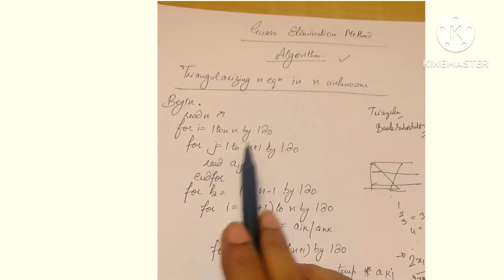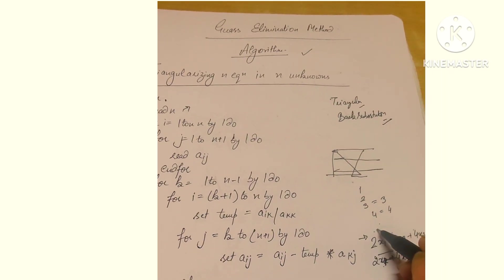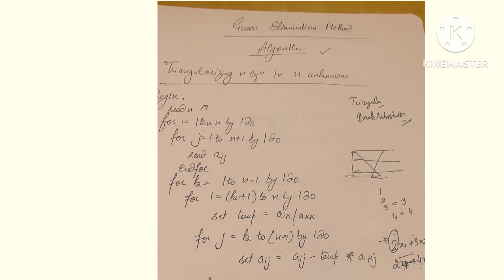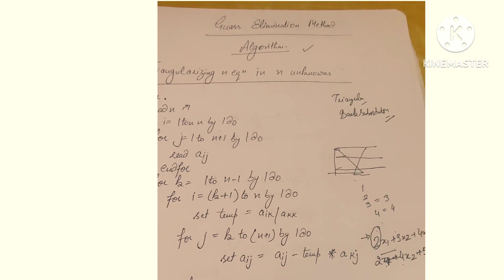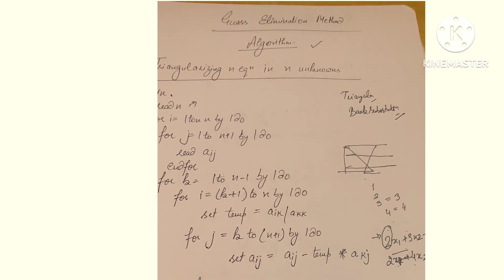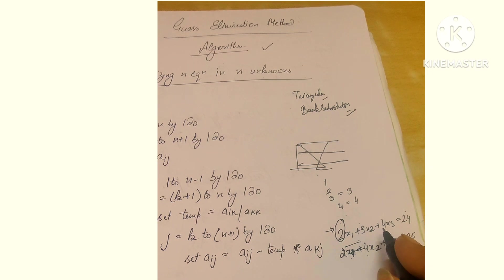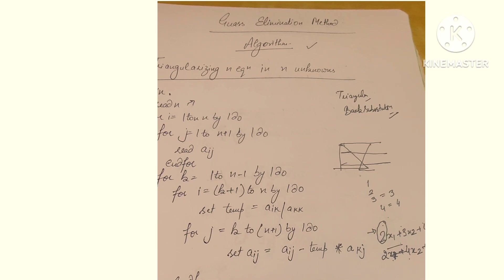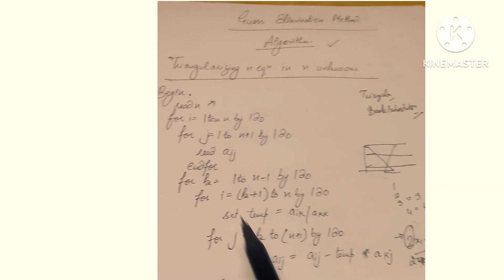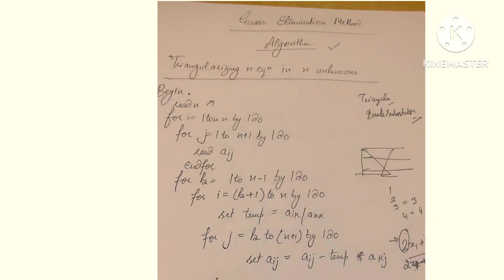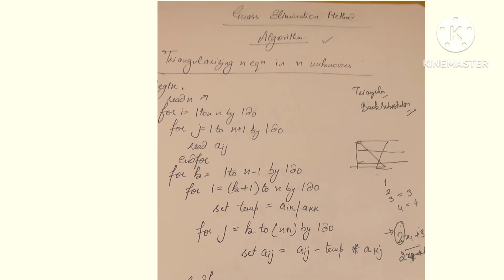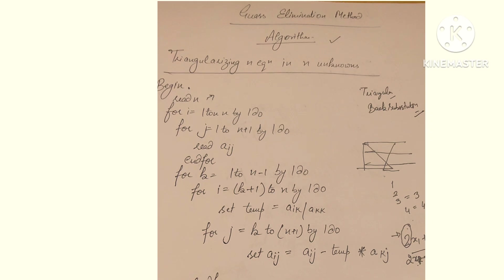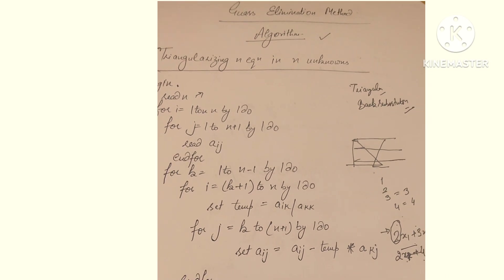This element reads: j equals 1 to n+1. When j goes inside, 1 to n+1: one gives a11, two gives a12. Look carefully at a11, a12, a13 according to the loop. i says one, meaning take the first row's element. j says j equals 1, meaning first row's first element.